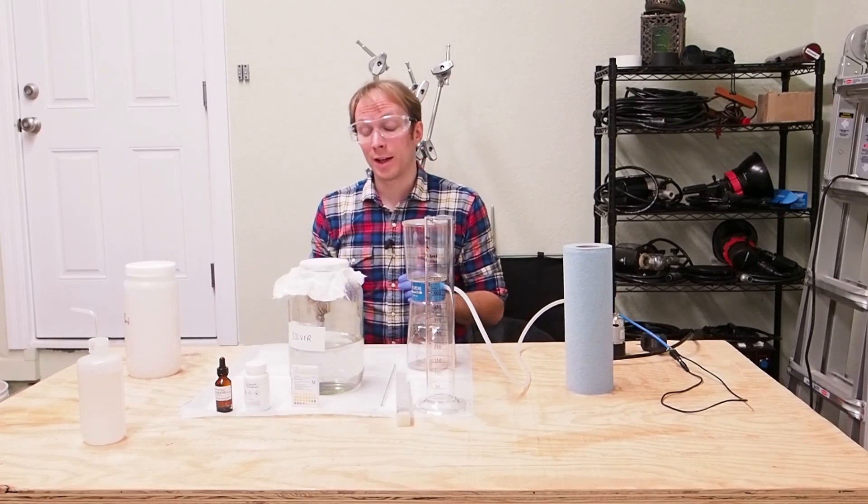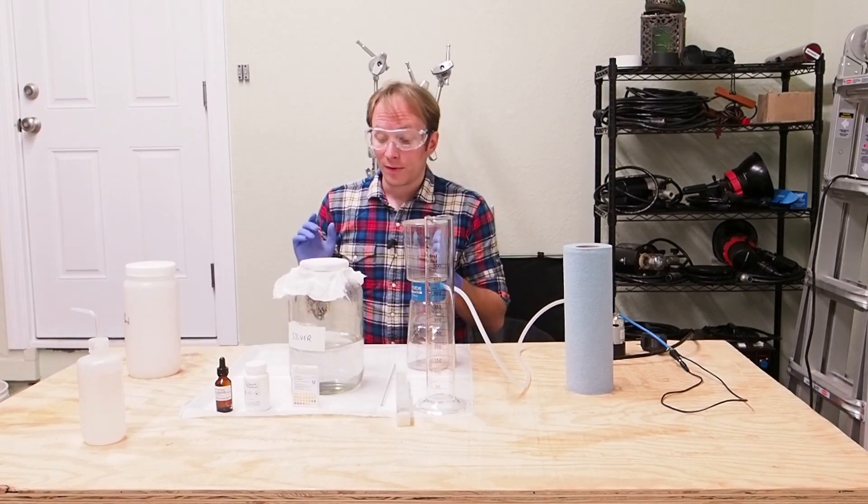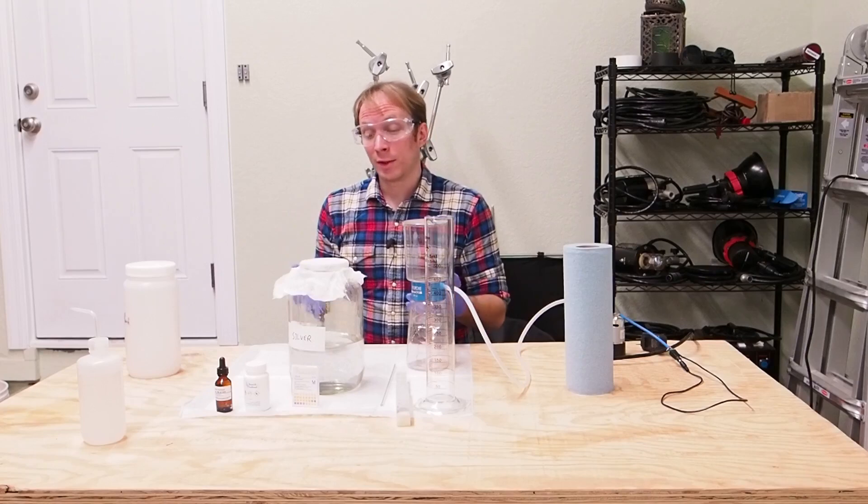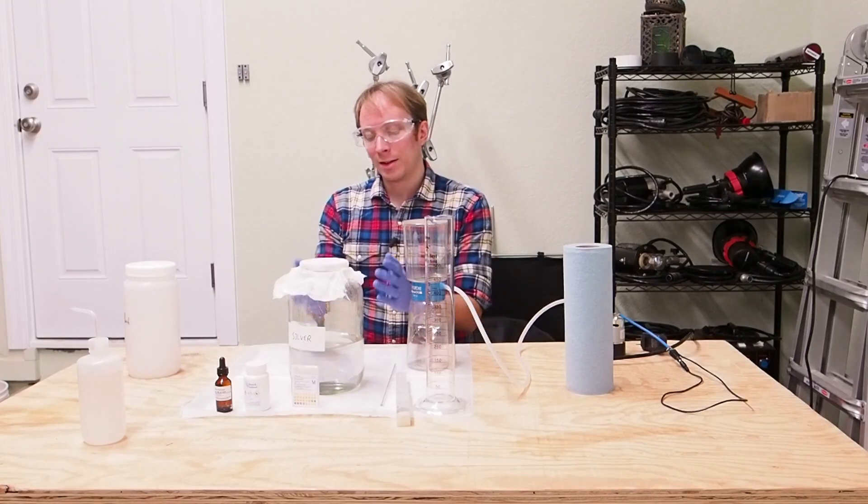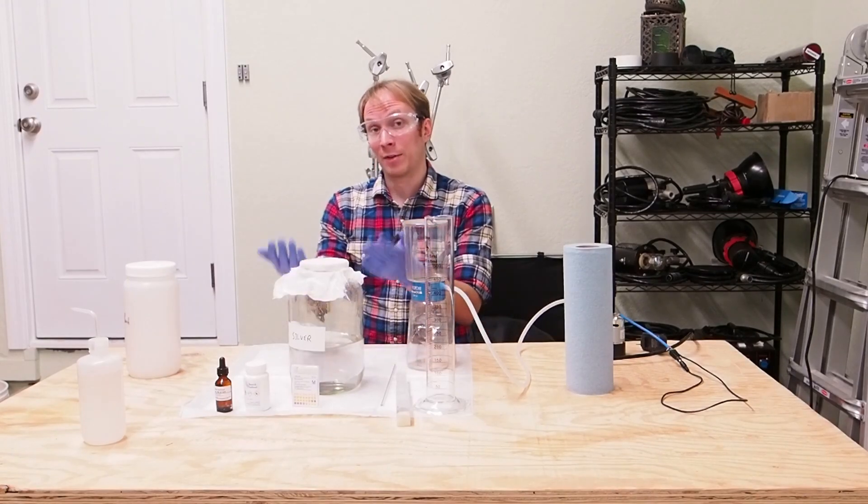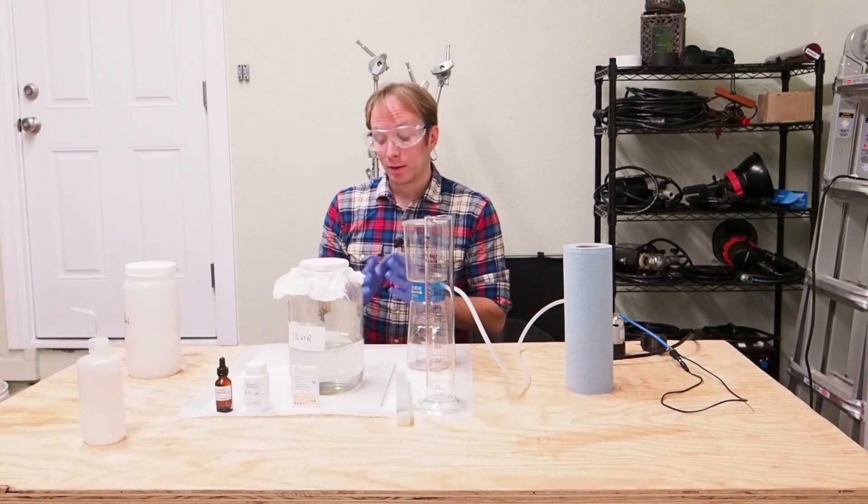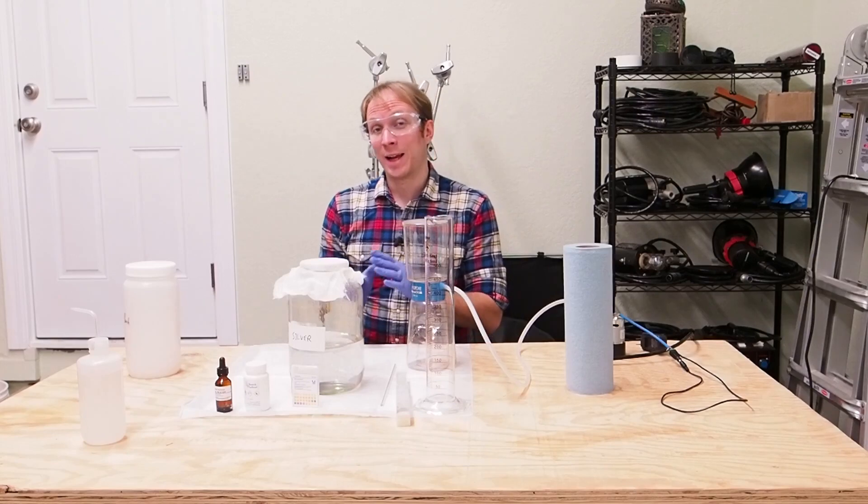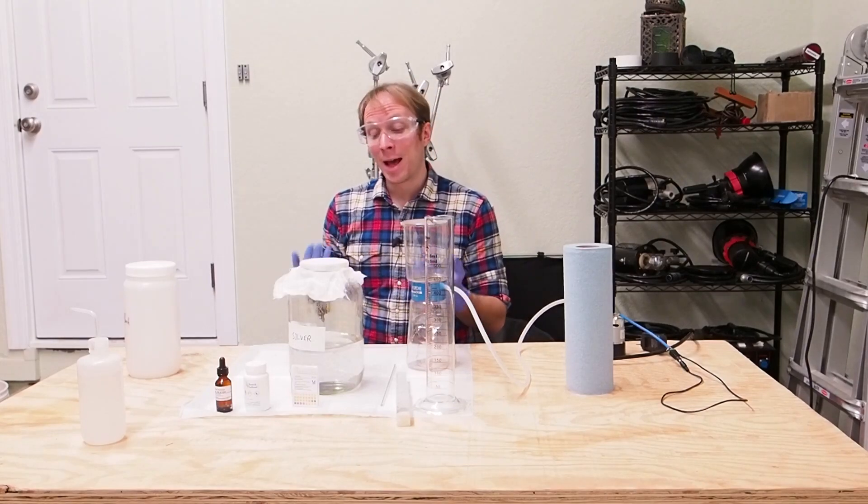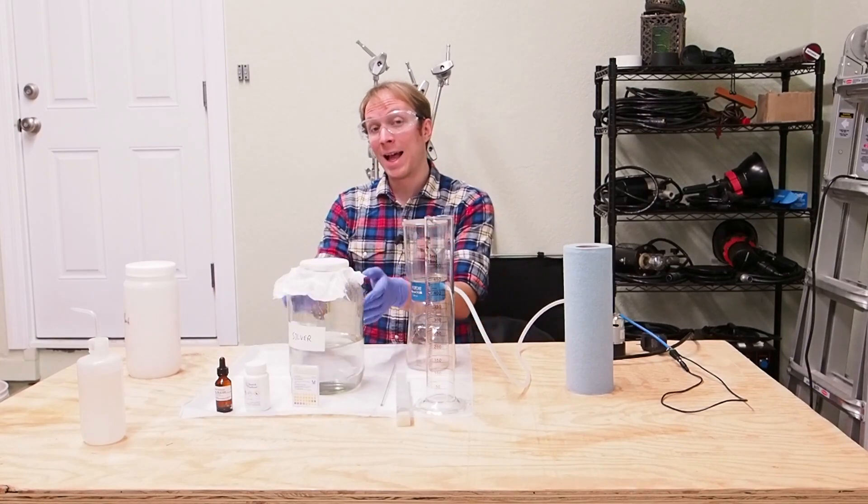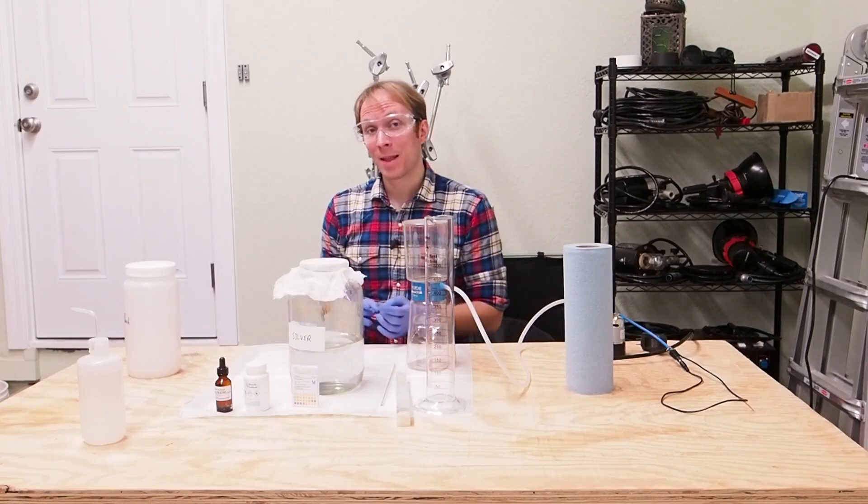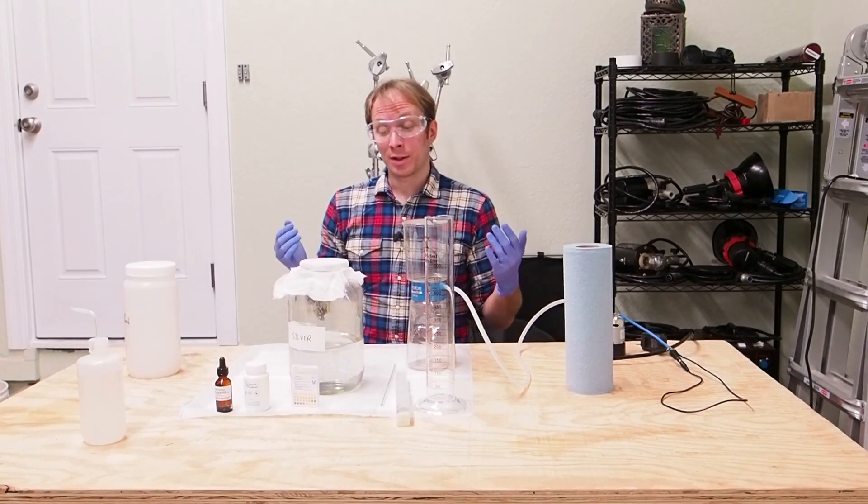Now, what this does is two things. First of all, it allows the solvents, the alcohol and the ether in the silver bath to evaporate out the top. The other thing that it does is the sunlight causes the silver nitrate to react with any organic contaminants in the bath, which will then turn black and fall to the bottom of the bath. At that point, you'll be able to filter them out.